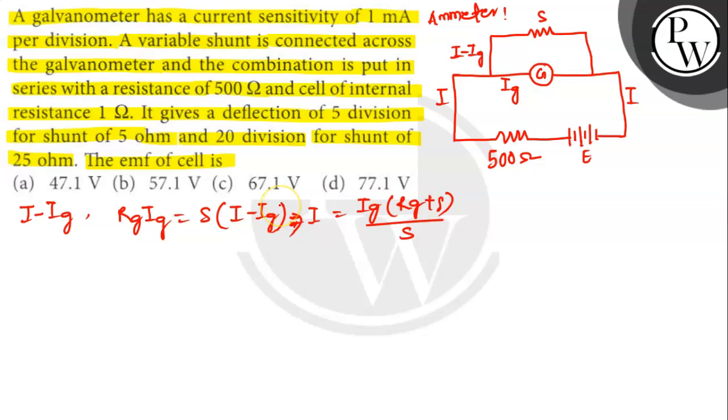Now when the shunt is 5 ohms, deflection in the galvanometer is 5. So S equals 5 ohm and IG equals 5 mA. So we can write I1 equals 5 into RG plus 5 divided by 5. I1 equals RG plus 5.